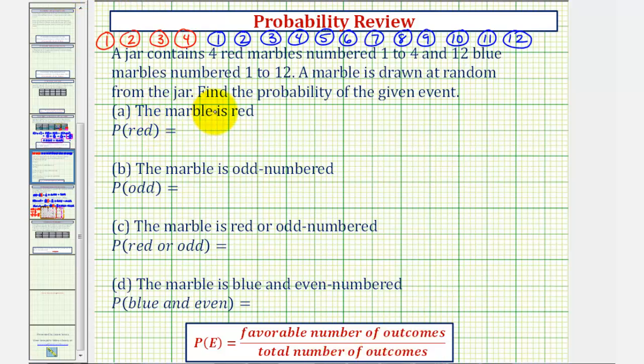So first we want to find the probability that the marble drawn from the jar is red. Notice how there are four favorable outcomes because there are four red marbles. And therefore the probability of selecting a red marble would be 4/16, which does simplify. There's a common factor of four, so this would simplify nicely to 1/4.